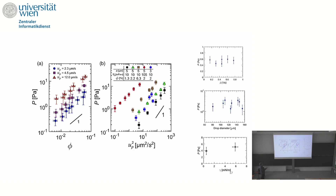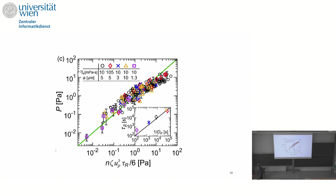The results look like this: the additional pressure, in Pascals, can reach almost 10 Pa. It is roughly linear in number density and in velocity squared. It is independent of the extension rate, drop diameter, and surface tension.